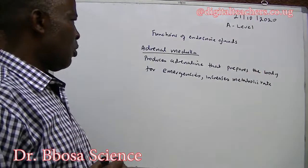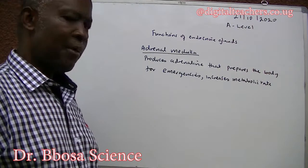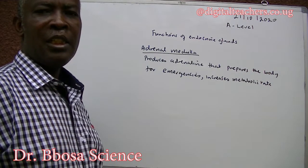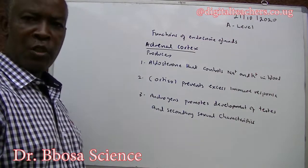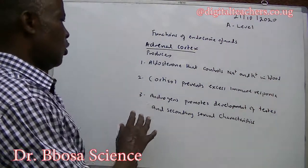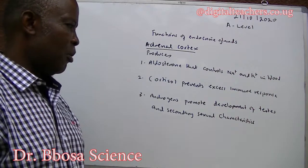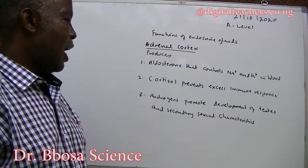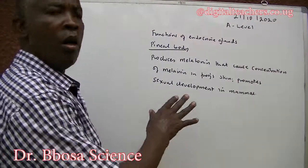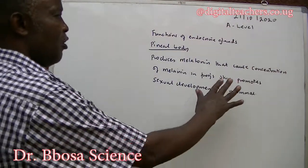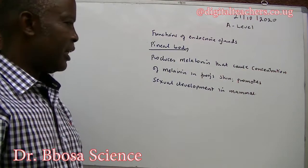The adrenal medulla produces adrenaline that prepares the body for emergencies — it increases metabolic rate, increases the heartbeat, and increases breathing. The adrenal cortex produces aldosterone that controls sodium and potassium ions in the blood, cortisol that prevents excess immune response, and androgens that promote development of testes and secondary sexual characteristics. The pineal body produces melatonin that causes concentration of melanin in the skin and promotes sexual development in mammals.